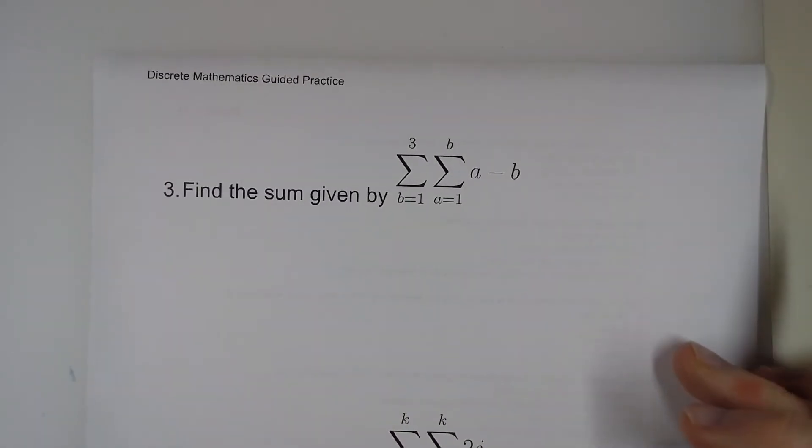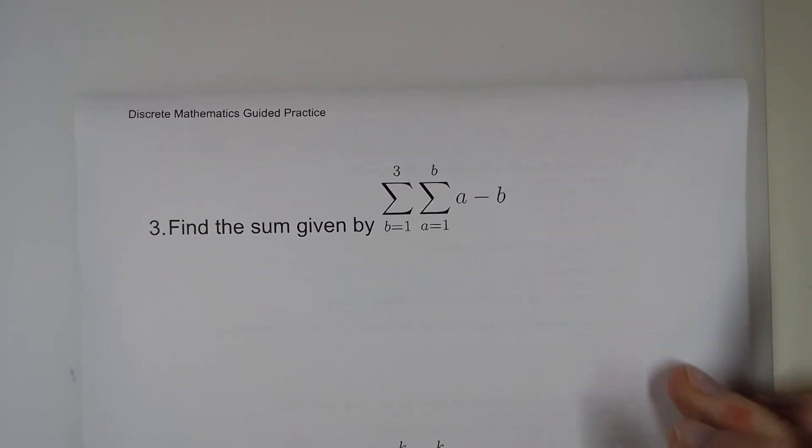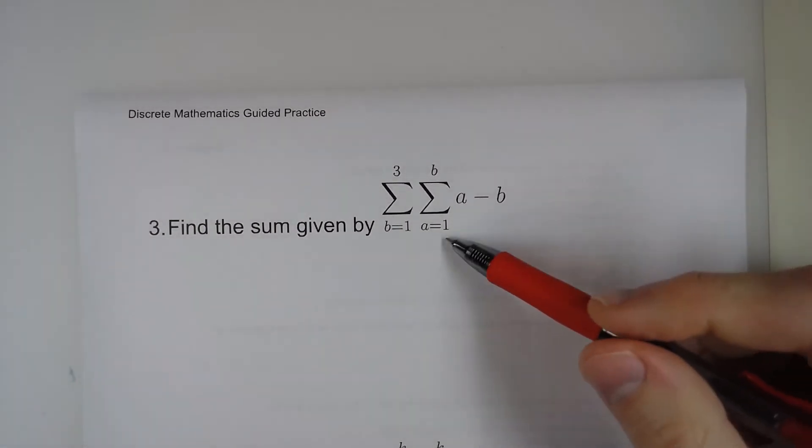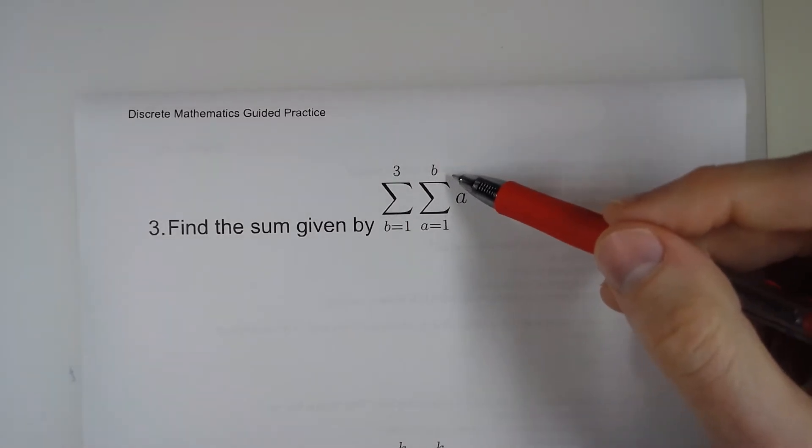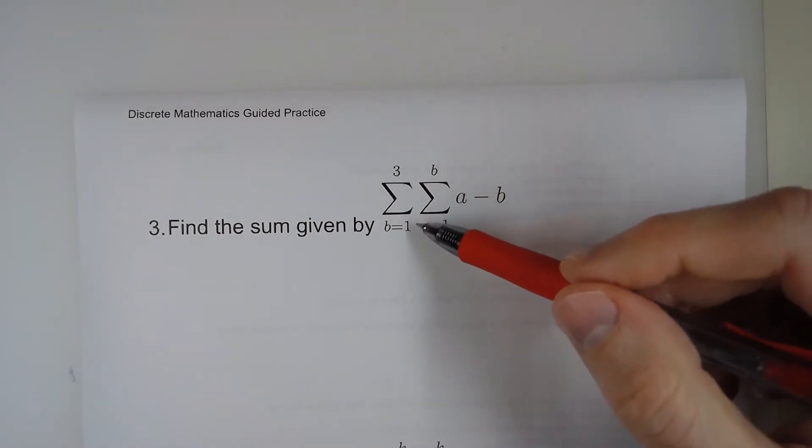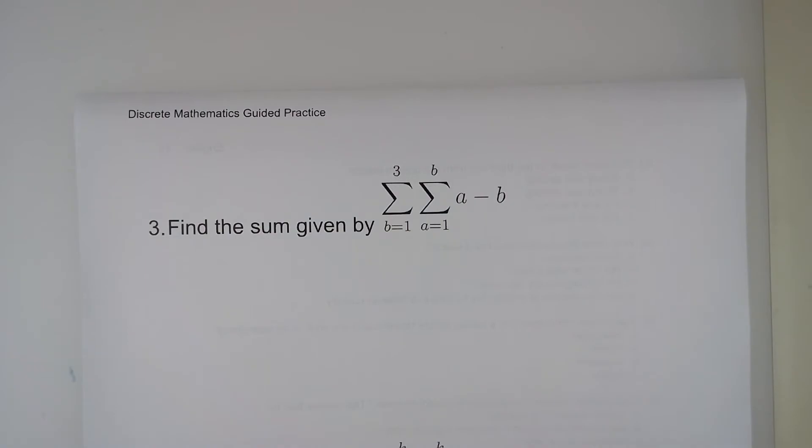Now over here, for number 3, here this is a little different because the first one goes from a to b. And then this says b goes from 1 to 3. So what we're going to do for this one is a little different.